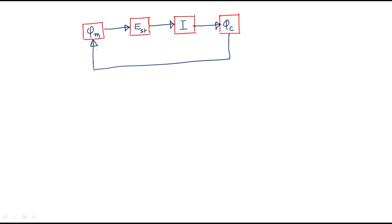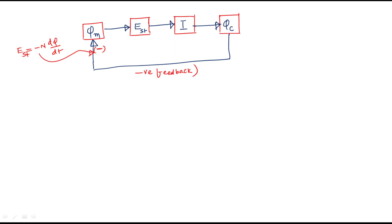This is negative. The negative sign in e_s = −N dφ/dt — this negative sign represents exactly this opposition, which is nothing but negative feedback. That is why the transformer is referred to as a negative feedback device, because the effect opposes the cause.